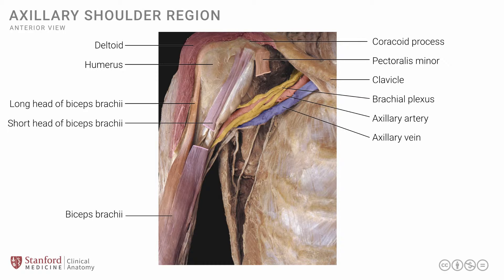The long head of the biceps and the short head of the biceps unite to form the biceps brachii muscle, and this is the muscle belly down here. Note that the short head of the biceps has been cut in the middle to expose an area that we will talk about in more detail in a subsequent slide. This exposes one muscle known as the coracobrachialis muscle, shaded in a bluish-grayish color. The coracobrachialis muscle is a relatively small muscle; it extends from the coracoid process onto the mid-shaft of the humerus, as the name would suggest.